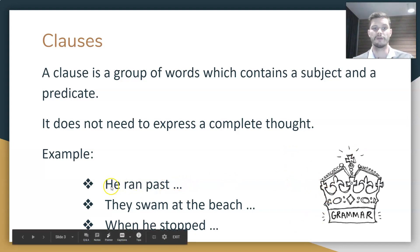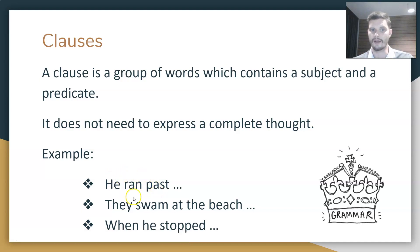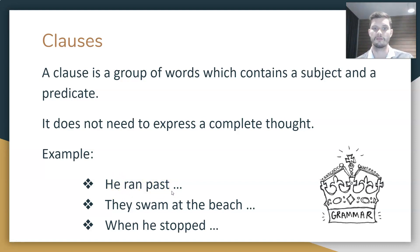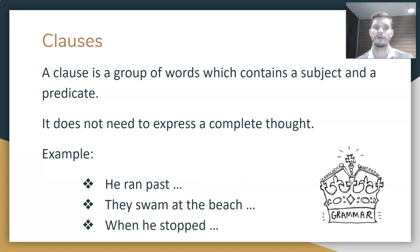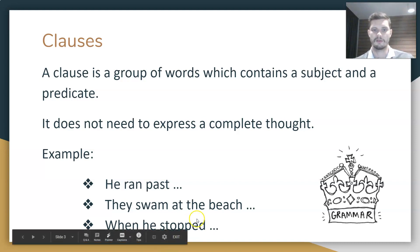Let's take a look at some examples. 'He ran past.' Does it have a verb? Yes, it does — 'ran.' Who's doing the running? He is, so it also has a subject. 'He ran past' also expresses a complete thought, so if you put a period here it could act as a complete sentence, but it is a clause because it has all the requirements of a clause.